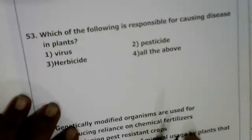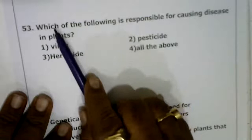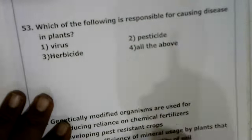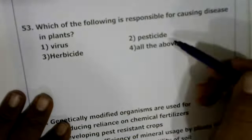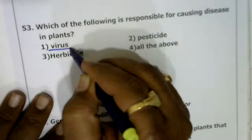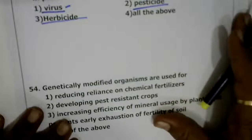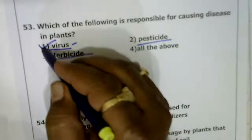Next: which of the following is responsible for causing disease in plants? The options are virus, herbicide, pesticide, or all of the above. The correct answer is virus, as it is a disease-causing organism. Herbicides and pesticides are chemicals used to kill herbs, insects, and pests — they are not disease-causing organisms.